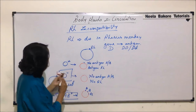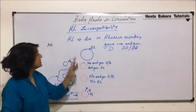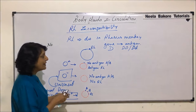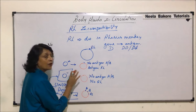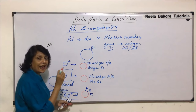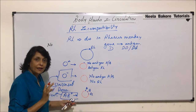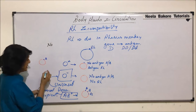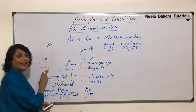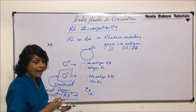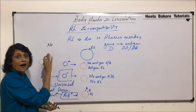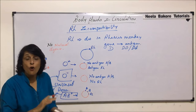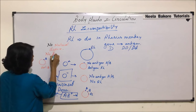There is one more important thing to remember: there is no natural defense against RH. If you recall, when we were talking about antigens A and B, we said that if a person has an antigen on their RBC, they would have an antibody against the foreign antigen. But in the case of RH, there is no natural defense. That means naturally, there is no anti-RH, also known as anti-D.